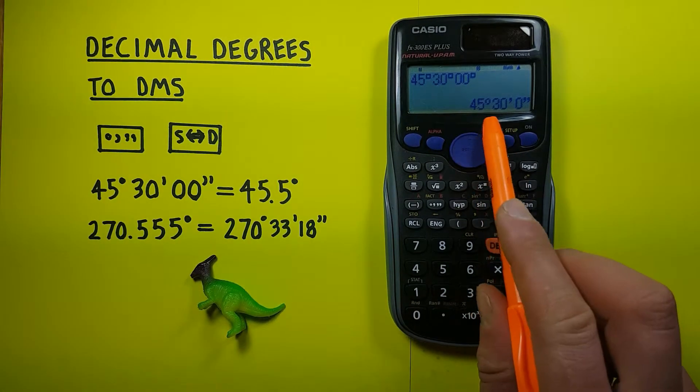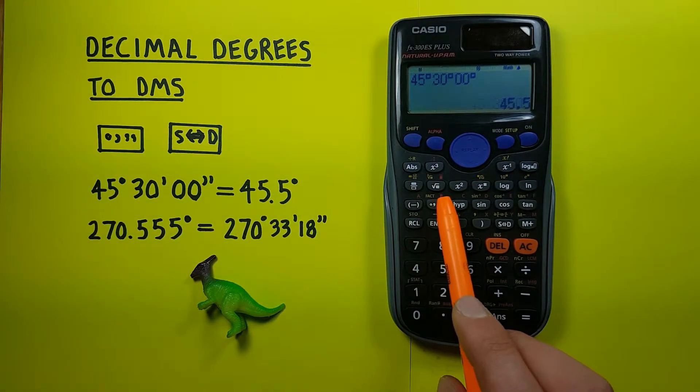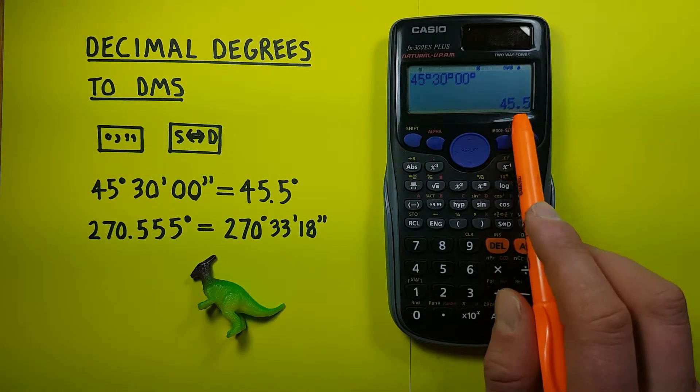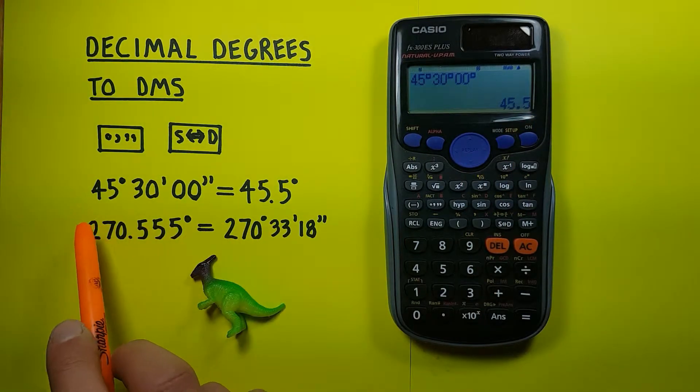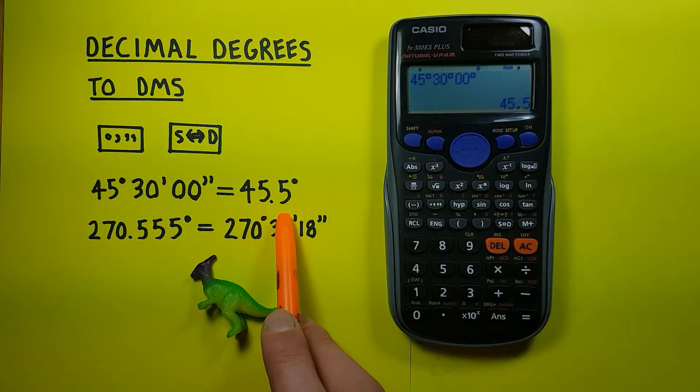And now that it's down at the bottom there, if we press this degrees, minutes, seconds button one more time, you can see it's converted from DMS to decimal degrees. So our 45 degrees, 30 minutes has become 45.5 degrees.